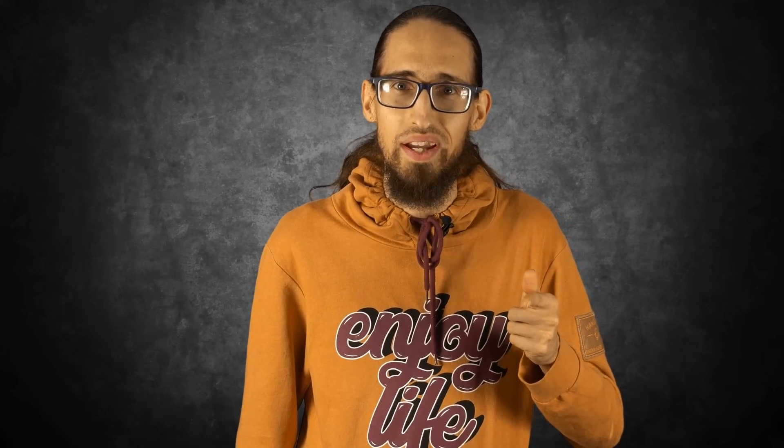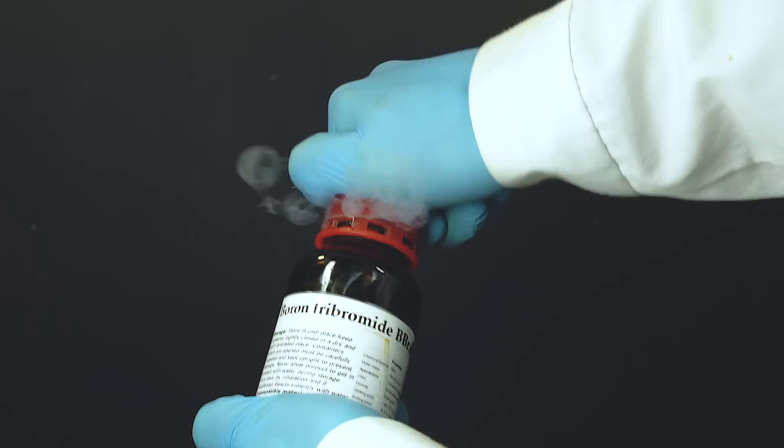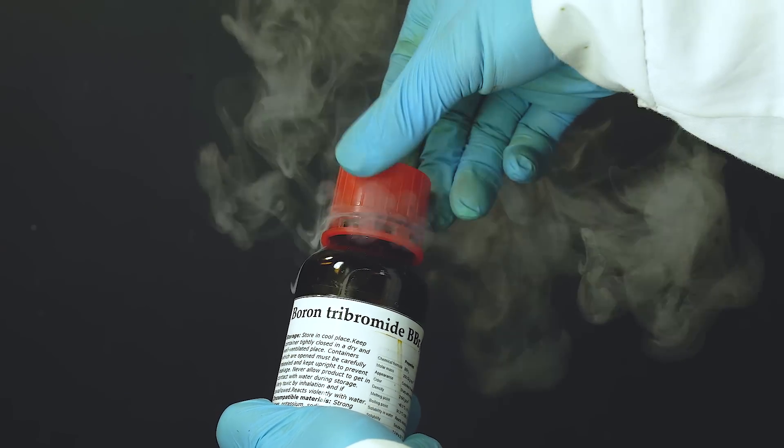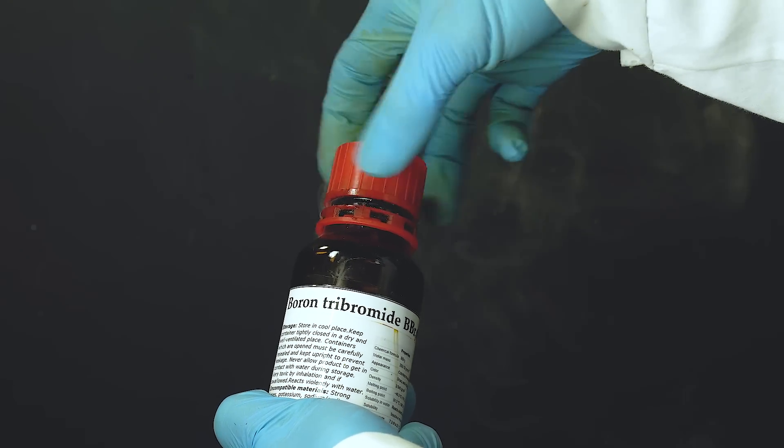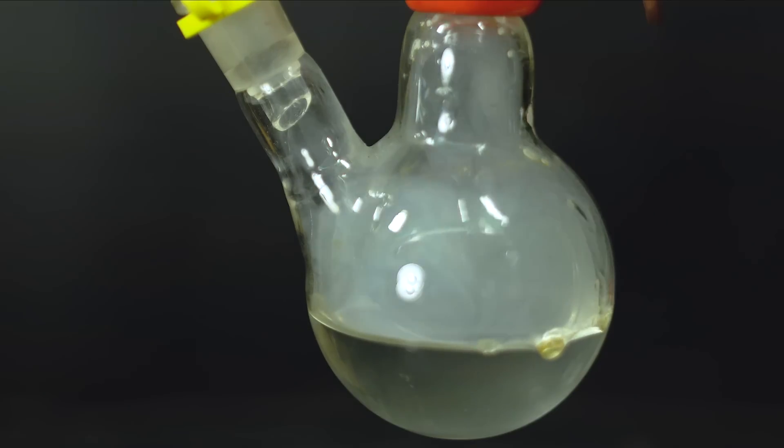As strange as it is, I didn't happen to have hydrobromic acid, so I had to get it. And how do true chemists get their hydrogen bromide? Exactly! Hydrolysis of boron tribromide. Boron tribromide is a fuming liquid compound. It's decomposed by water and forms hydrogen bromide and boric acid.